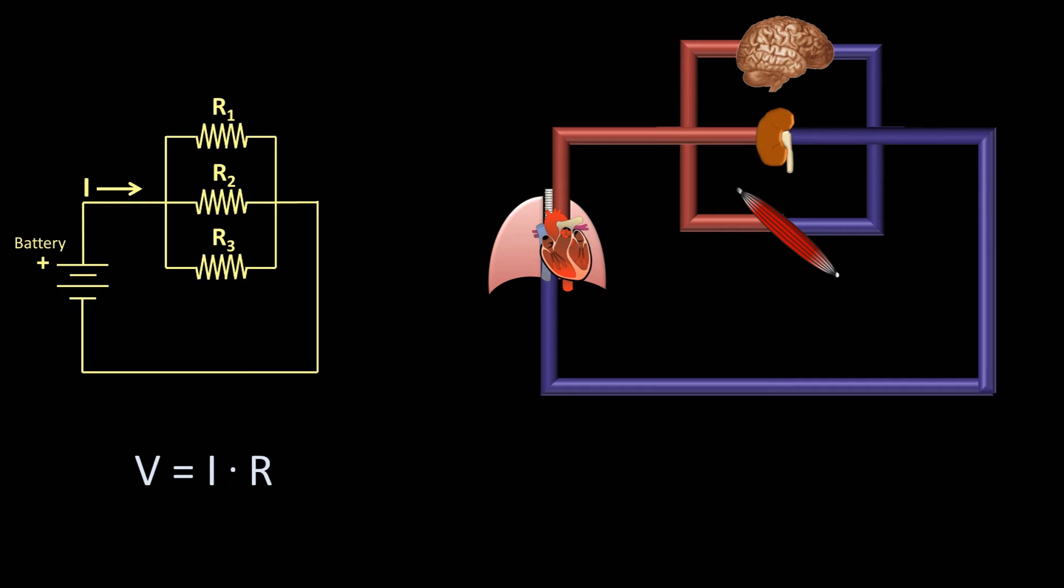The pressure difference across the battery of the heart is the difference between the mean arterial pressure, which is the weighted average between systolic and diastolic pressure, and the central venous pressure. The fluid flow in the body is called the cardiac output, which is the measure of how much blood the heart pumps each minute.